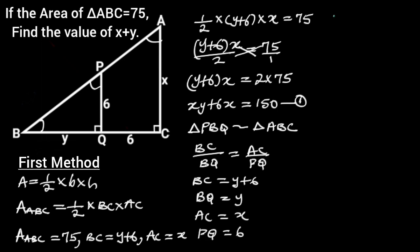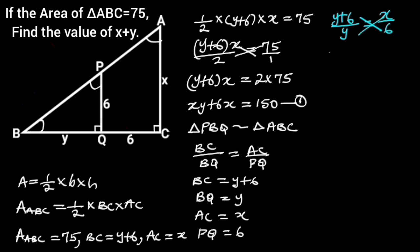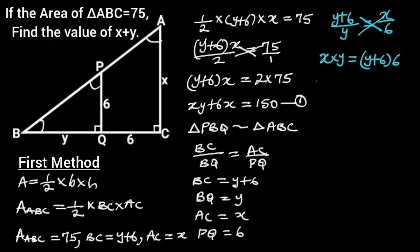Substituting these values in this formula will give us: (Y plus 6) over Y equals X over 6. By cross multiplication, X times Y equals (Y plus 6) times 6, which gives us XY equals 6Y plus 36. Let this be equation 2.